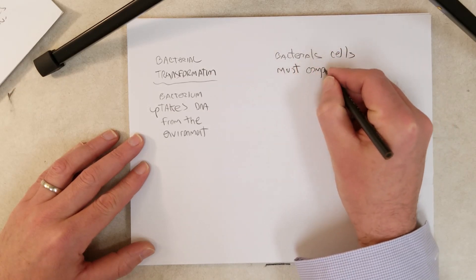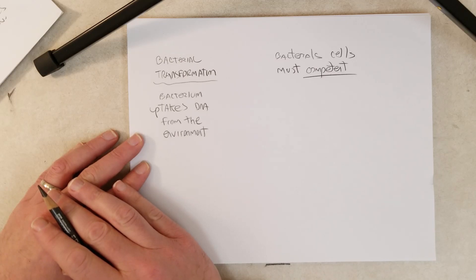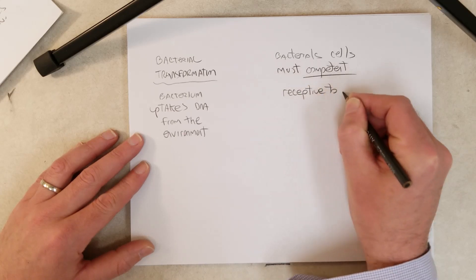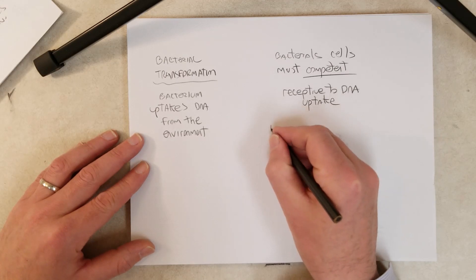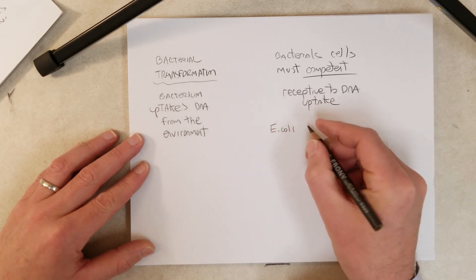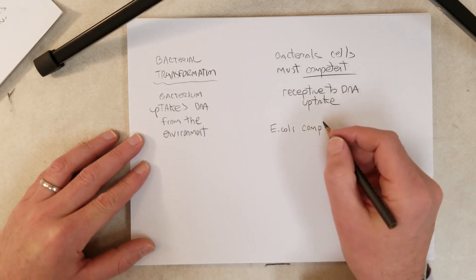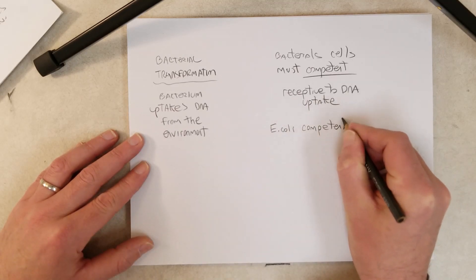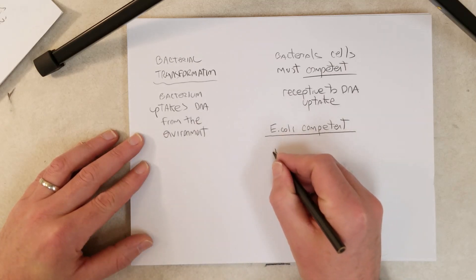Competent for what? Competent to take up DNA. Competent bacterial cells are ready and receptive to importing DNA from the environment. What makes a bacterial cell competent is something I've wondered about for a long time, and I have yet to find a satisfactory answer. We have methods that can make certain bacteria competent, but why these methods work, I don't think anyone knows — and if someone tells you they know why it works, I think they are exaggerating.